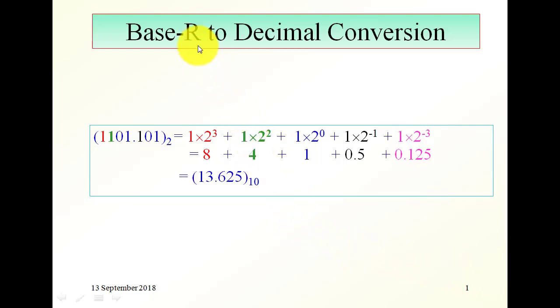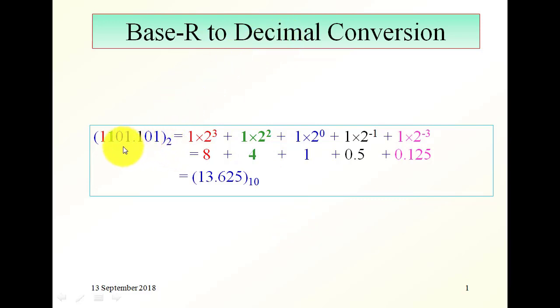How to convert from base R to decimal. In this example, we have a base 2 number. We want to convert it into a base 10 number, a decimal number.